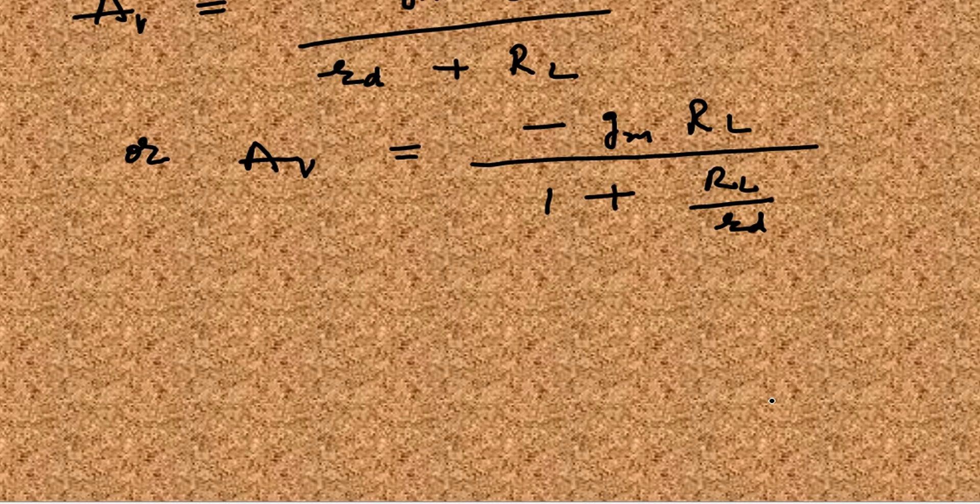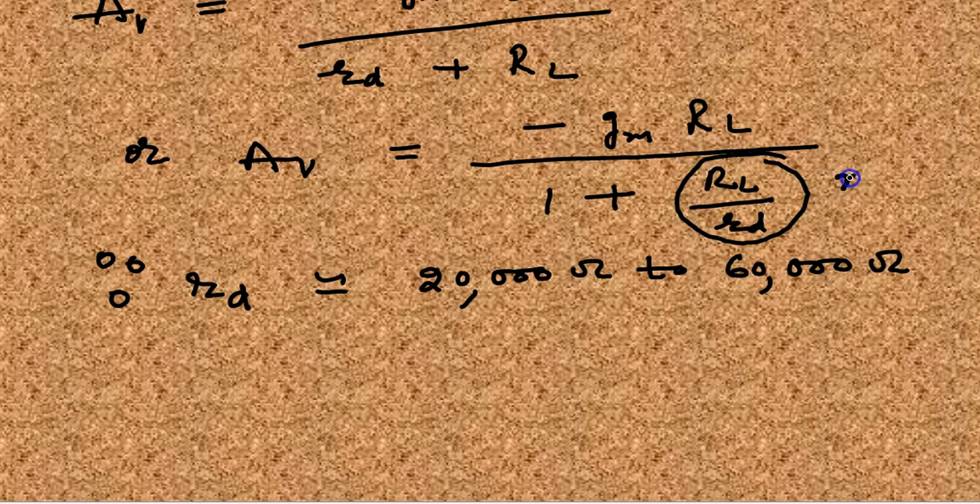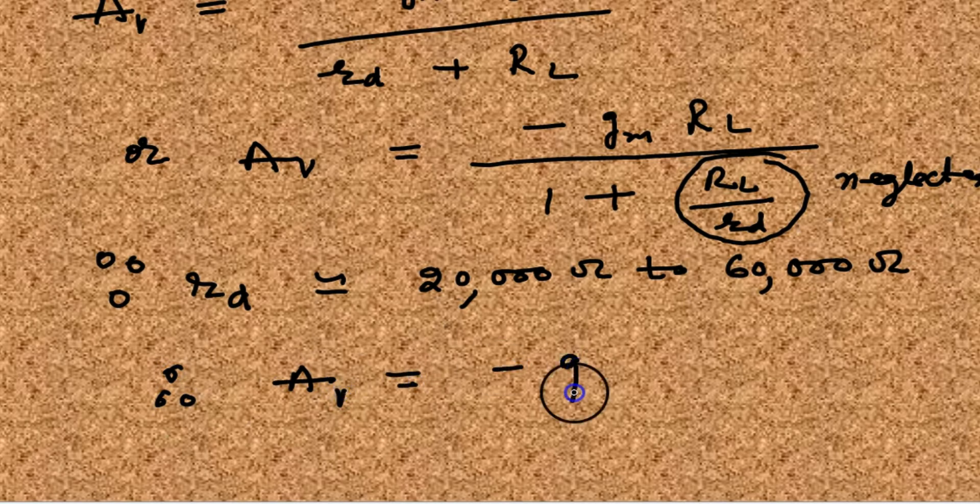Now further simplification. The value of Rd is very very high, it's 20,000 ohm to 60,000 ohm, so this is neglected because the denominator is very high.